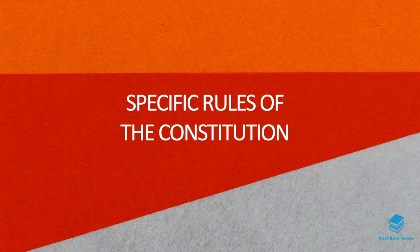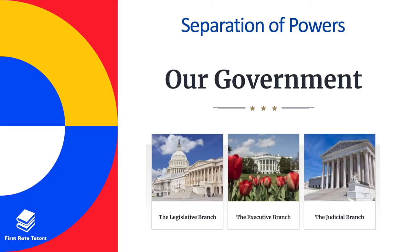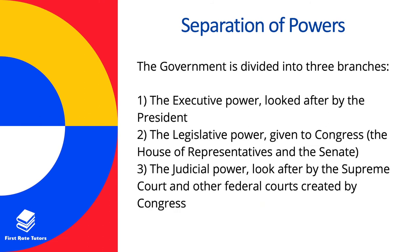Let's examine some more specific rules of the constitution and how these affect the government. There is a separation between the legislative branch, the executive branch, and the judicial branch, all outlined in the constitution. The constitution divides the government into three branches: executive power looked after by the president, legislative power given to Congress — including the House of Representatives and the Senate — and judicial power looked after by the Supreme Court and other federal courts created by Congress.